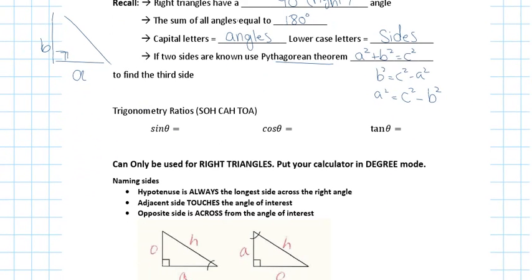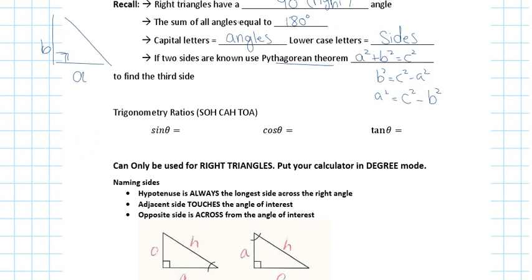For the other cases of the right angle triangle — if I have an angle and a side, or if I have two sides and I'm looking for an angle — then I'm going to have to use my trig ratios, SOHCAHTOA. Sine is opposite over hypotenuse, cosine is adjacent over hypotenuse, and tan is opposite over adjacent.